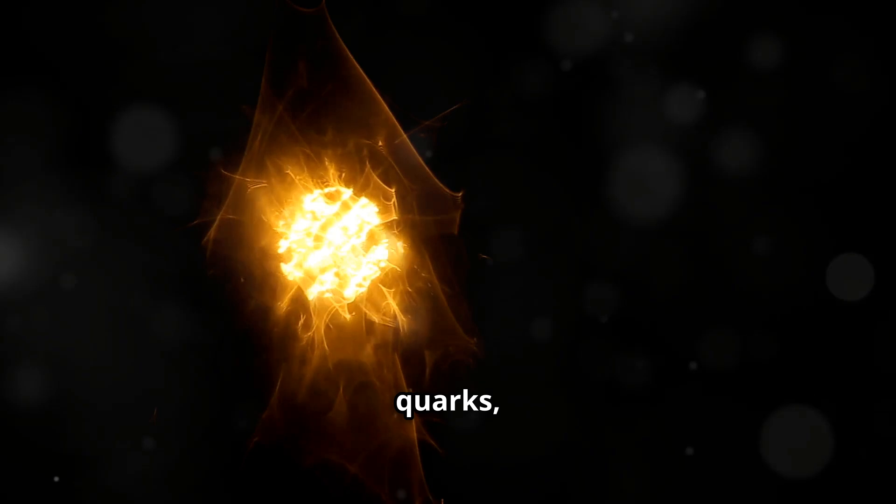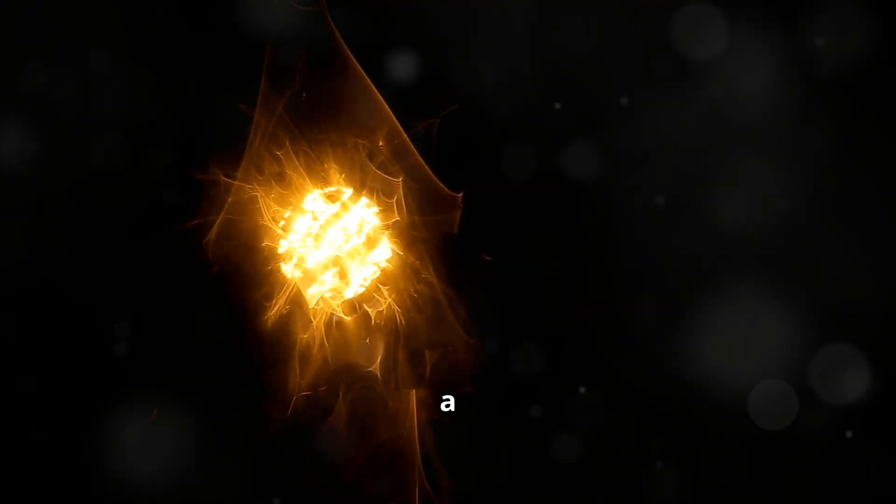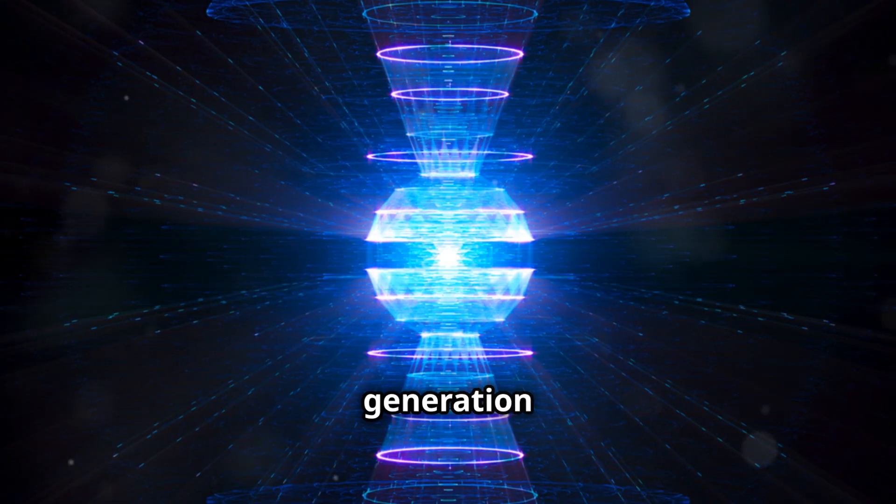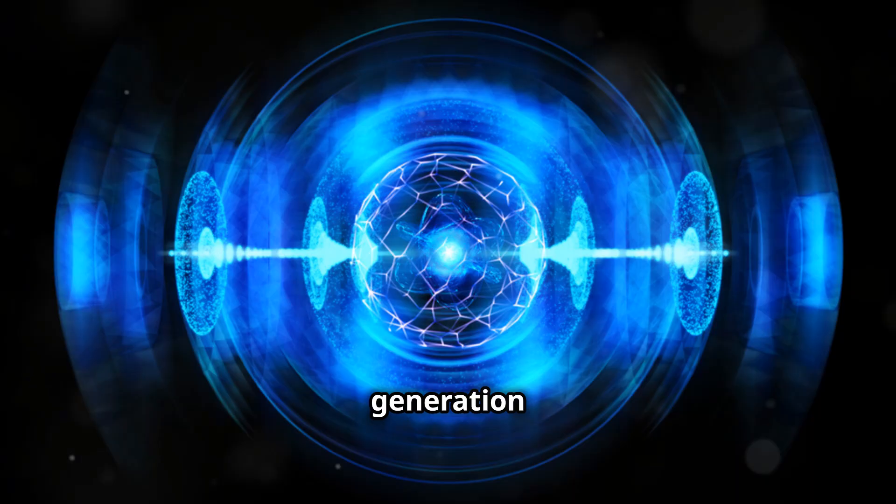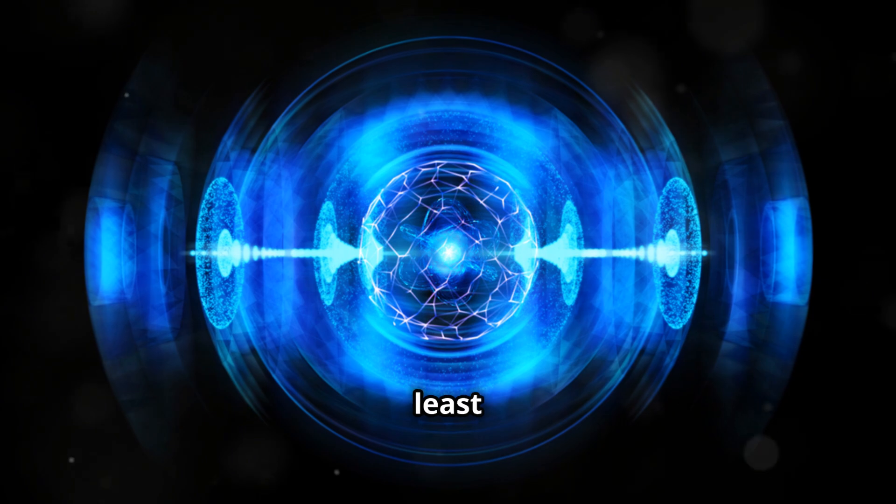Leptons, like quarks, come in three generations. Each generation is associated with a different set of particles, each heavier and more unstable than the last. Each generation is heavier and more unstable than the previous one. The first generation is the lightest and most stable, while the third generation is the heaviest and least stable.